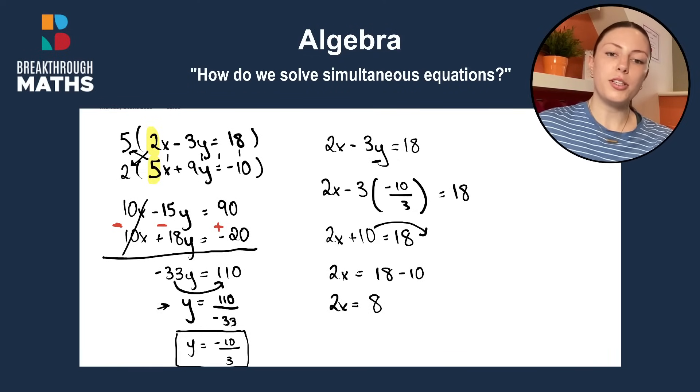So, same as we did over here, what we do is if we want what just x is, the 2 has to come in under 8. So, we have 8 divided by 2. So, our x is going to be 4.